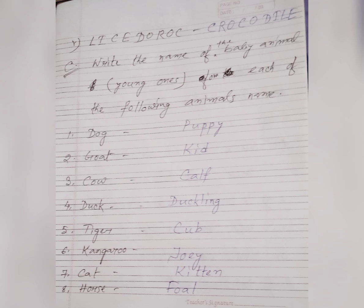Number 6: Kangaroo — the baby is joey. Number 7: Cat — the baby is kitten. Number 8: Horse — the baby is foal.